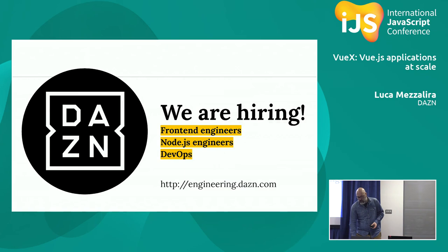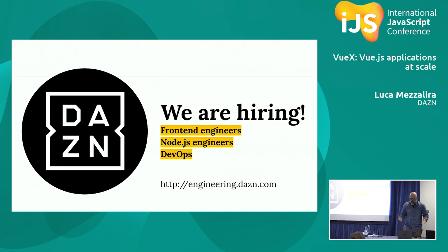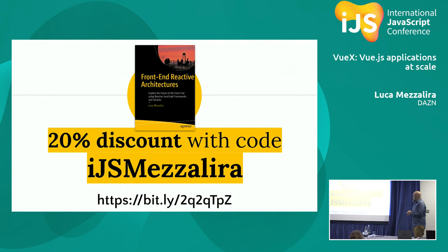Last thing: if you see this logo, that's us — we're hiring. We're looking for front-end engineers, Node.js, and DevOps. If you're interested, let me know — there are quite a few of my colleagues at the conference over the next few days. Also, the publisher gave me a discount code: if you buy my book on the ePress website, you can get a 20% discount with this code.